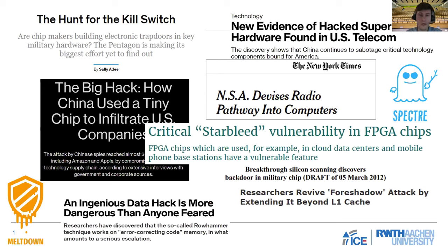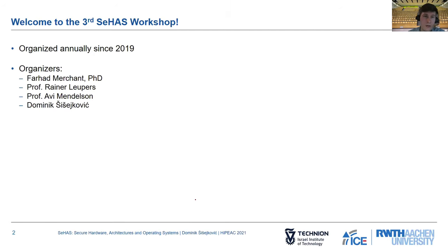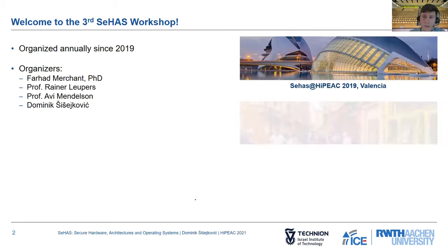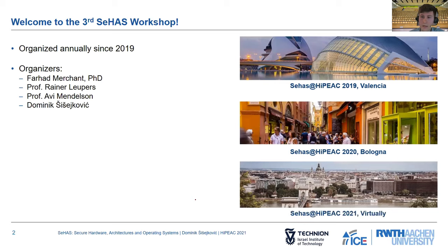This is the motivation for this workshop — to invite the greatest minds in this area, to analyze what we could do to improve the state of security of future systems and, of course, maybe create some collaborations down the road. Welcome to the third SHAS workshop. We have organized this workshop annually since 2019, in very nice places including Valencia in 2019 and Bologna in 2020. This year, for obvious reasons, we have to do it virtually, but it turns out this had some positive connotations.